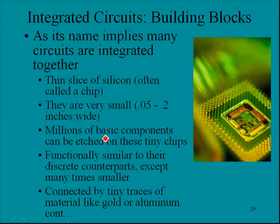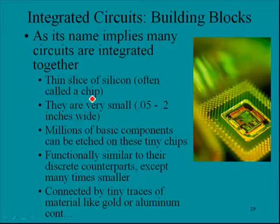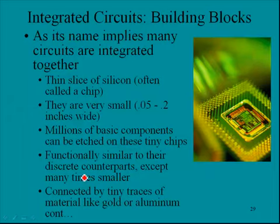Next, we have integrated circuits — building blocks of complex electronic systems. As the name implies, many circuits are integrated together, usually on a thin slice of silicon, often called a chip. They are very small, from 0.05 to 0.2 inches wide. Millions of basic components can be etched on these tiny chips, connected by tiny traces of material like gold or aluminum.